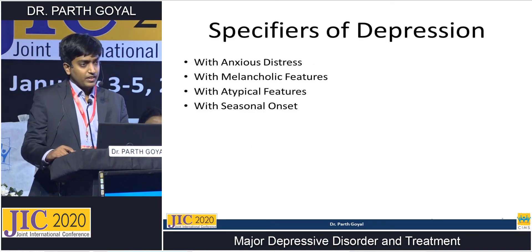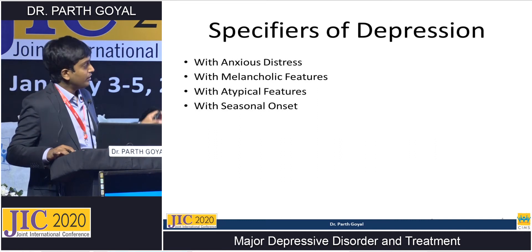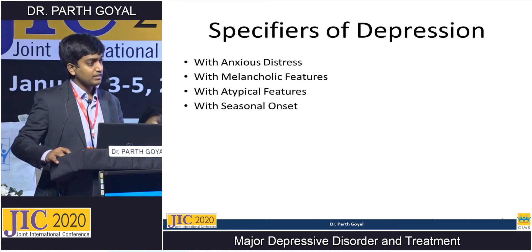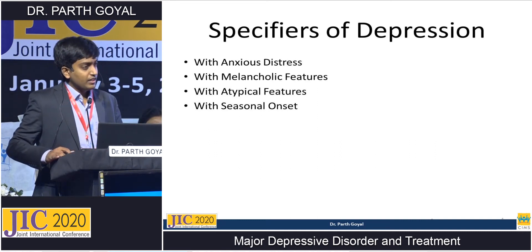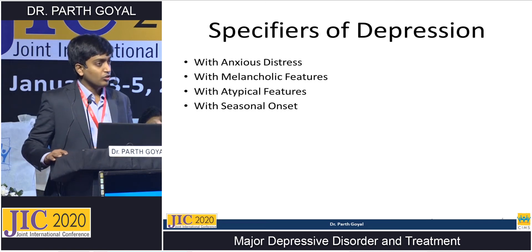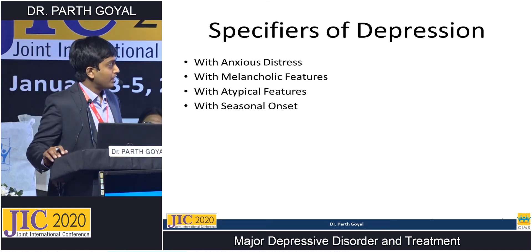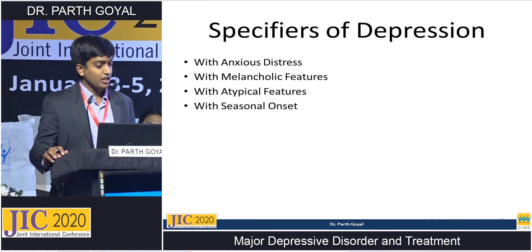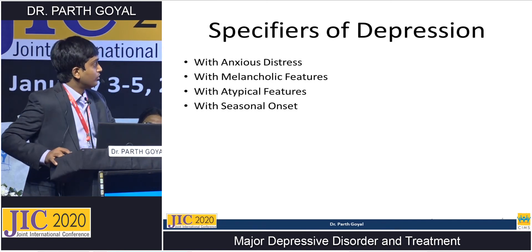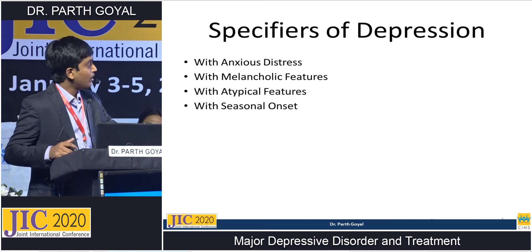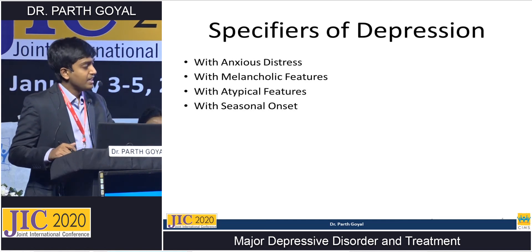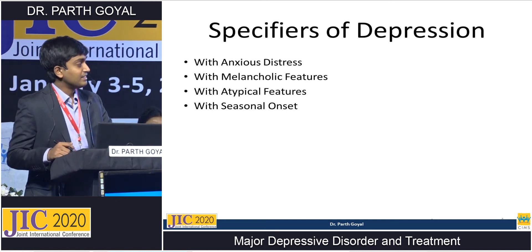There are certain specifiers of depression, and most of my cases today will talk about these specifiers because these are things we commonly see in clinical practice where usual treatment does not seem to help. We need to tweak certain treatments to help these patients. The most common specifiers are anxious distress, melancholic features, atypical features, and seasonal onset.